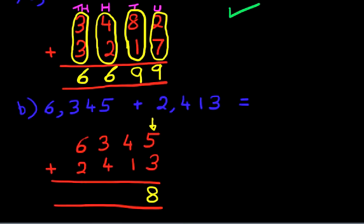We're now going to add the tens column. That's this column here. What is 4 plus 1? That's right. It is 5. Now we're going to add the hundreds column. What is 3 plus 4? That's right. It is 7.